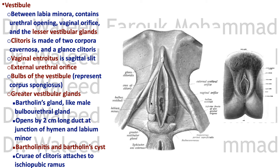The bulbs of the vestibule are located on the sides of the vestibule and represent the corpus spongiosum — they are united in males but remain split here. The greater vestibular glands, or Bartholin's glands, descend to the superficial perineal pouch while remaining in the deep perineal pouch, with their duct piercing the perineal membrane. The duct is two centimeters long and opens at the junction of the hymen and the labium minus.